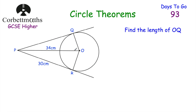In the next question, we've got a circle with centre O, and point P outside the circle. A tangent touches the circle at Q and another at R. We want to find the length OQ. Since a tangent and radius meet at 90 degrees, triangle OPQ is a right-angle triangle. Also, tangent lengths from an external point are equal, so PQ equals PR equals 30 cm. We have two sides of a right triangle and need to find the third using Pythagoras's theorem.